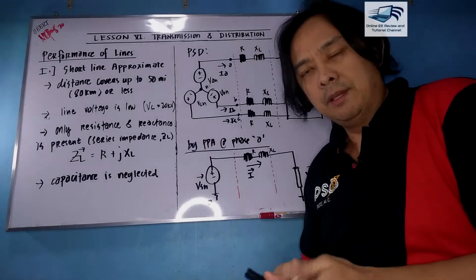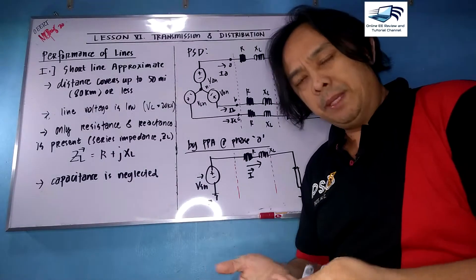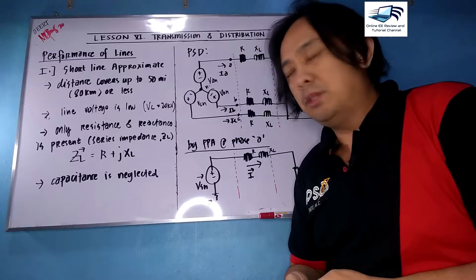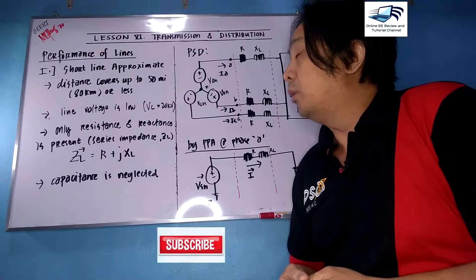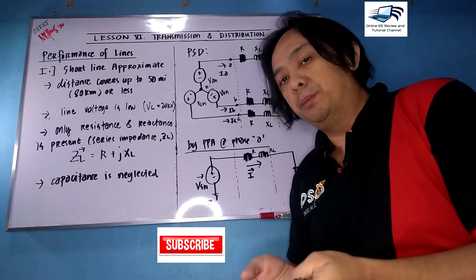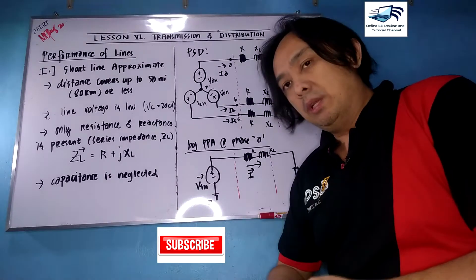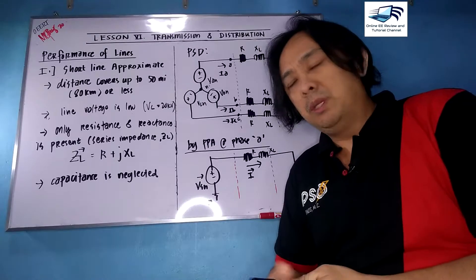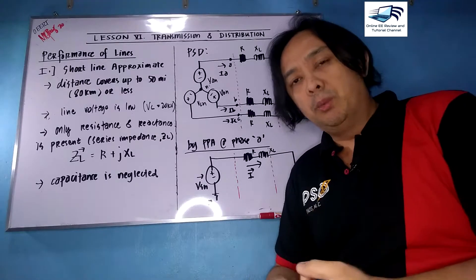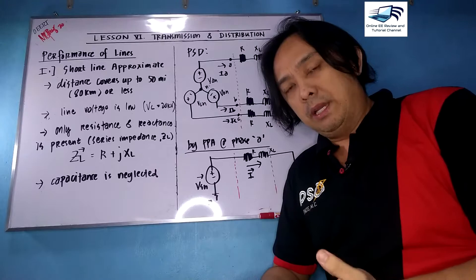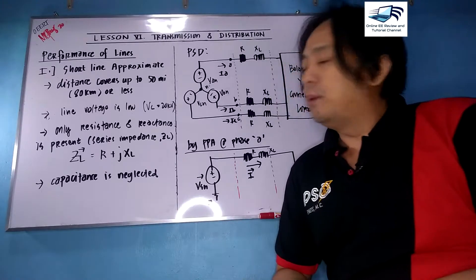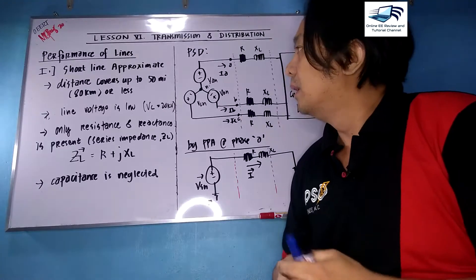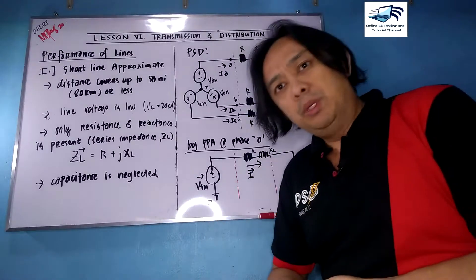Hi and hello once again. We are on our new topic, lesson number six, which is transmission and distribution. We are on our new topic which is performance of transmission lines. There are many types of transmission lines: the short line, the medium line, and the long line. Today we will first discuss the fundamentals of a short line approximate.